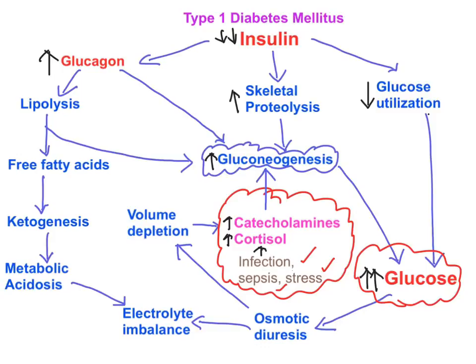To briefly review: diabetic ketoacidosis begins with triggering events like infection, sepsis, or stress, giving rise to elevation of catecholamines and cortisol. These act synergistically with elevated glucagon in type 1 diabetes mellitus, leading to increased gluconeogenesis and hyperglycemia. Gluconeogenesis is supported by glycerol from triacylglycerol lipolysis and amino acids from skeletal muscle proteolysis, both occurring under the influence of decreased insulin levels.